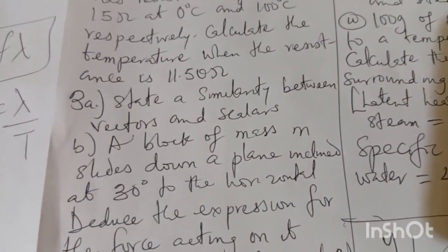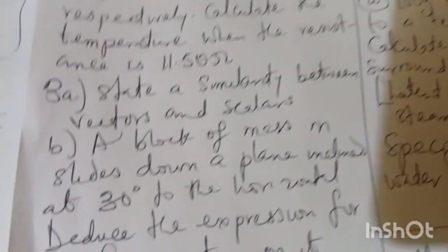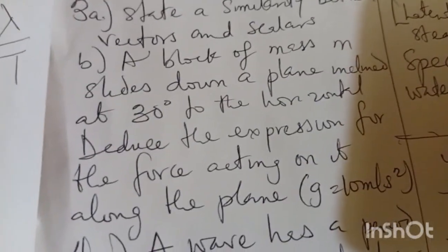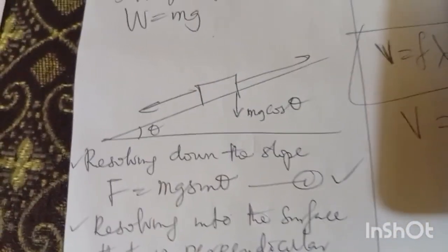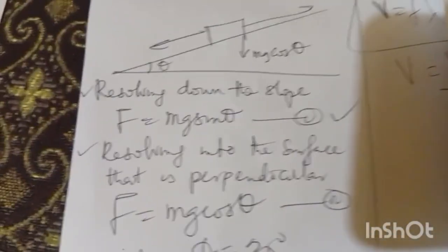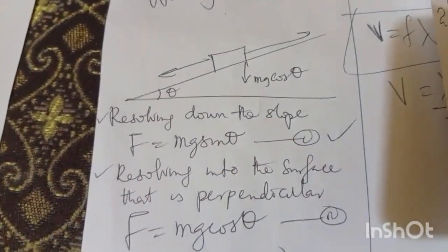I move to 3b. It said a block of mass m slides down a plane inclined at 30 degrees to the horizontal. Write the expression of the force acting on it along the plane. You know on this thing we have two major forces: force being downward mg cos theta and the one on the plane mg sin theta. That's what we need for this question. I give it out, so I move to the expression. From there I replace my theta with 30 degrees, g has been given. From there I have this as my final response for question three.